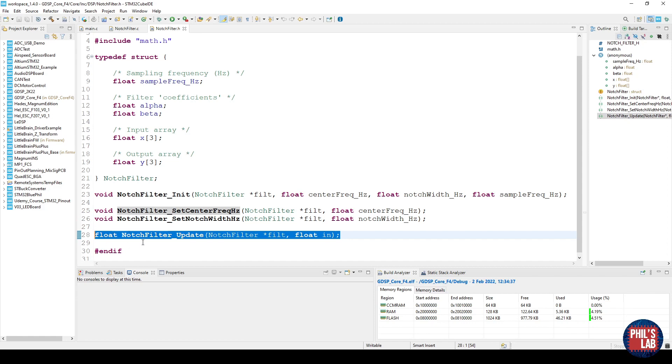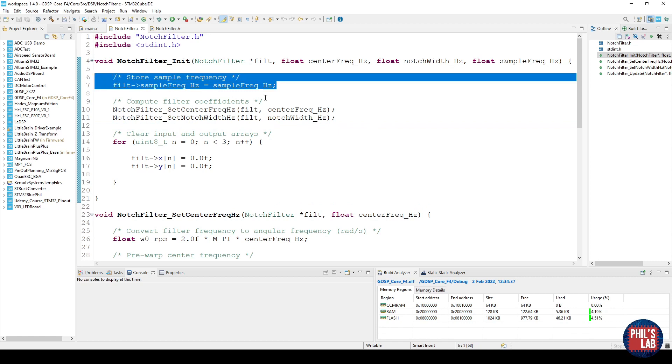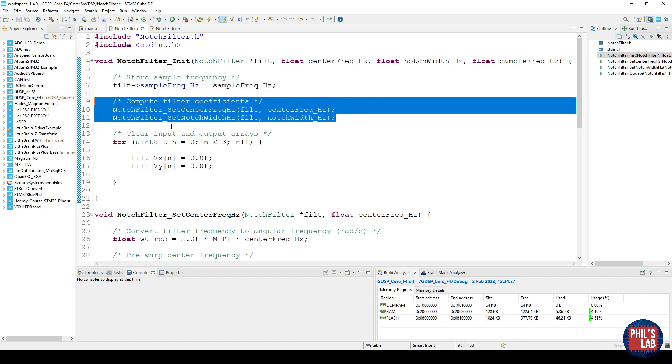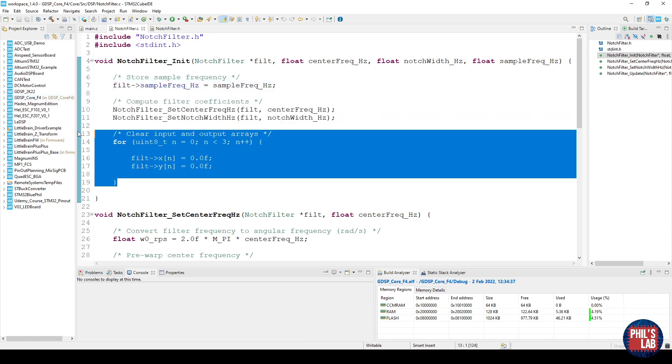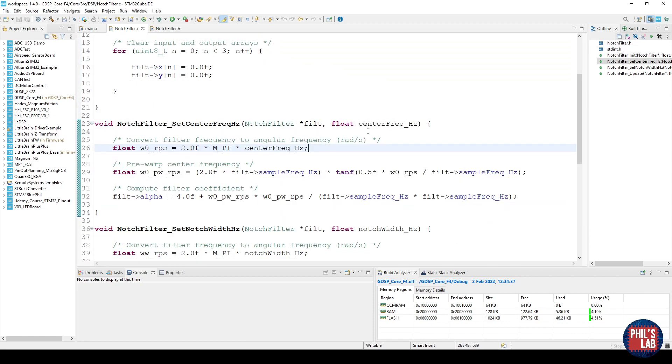The most interesting function so to speak is this notch filter update function which takes in our raw input data and gives us the floating point output the current value of our filter. I'm sorry for saying this so often but a lot of this information or most of it is already contained in notch filter video. The notch filter initialization function stores the sampling frequency, computes the coefficients by calling our functions and clears the input and output arrays.